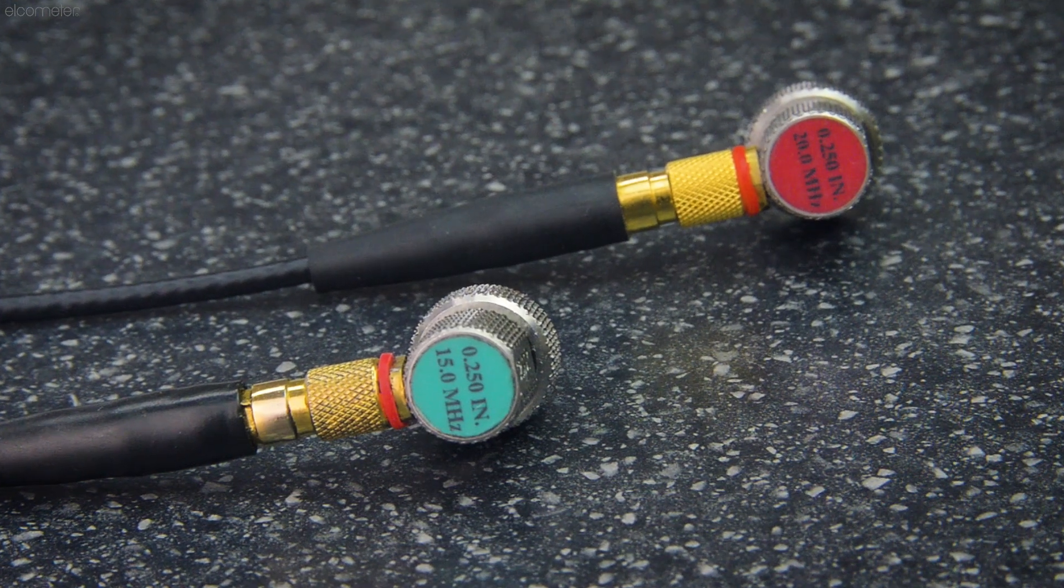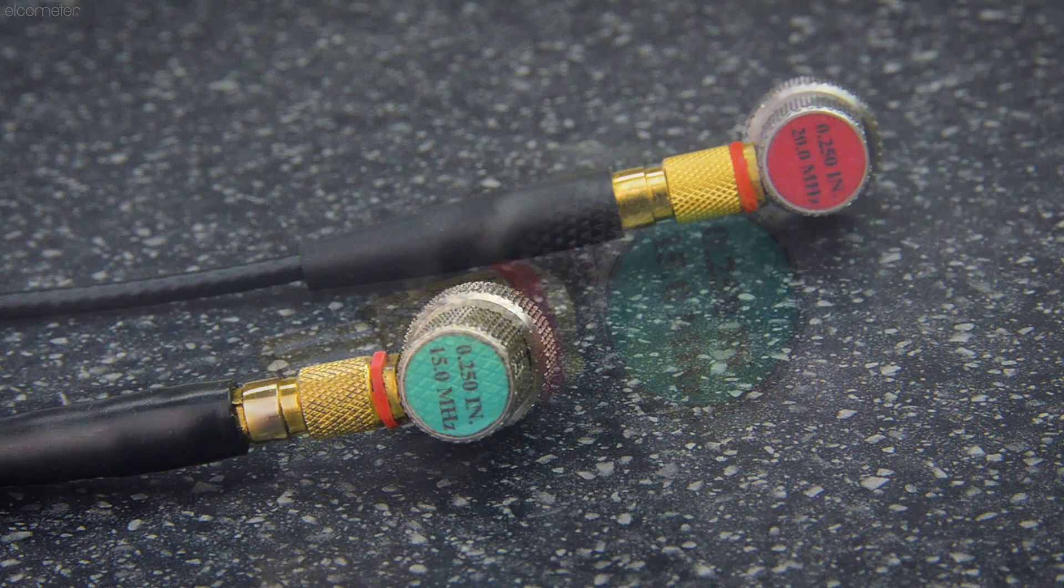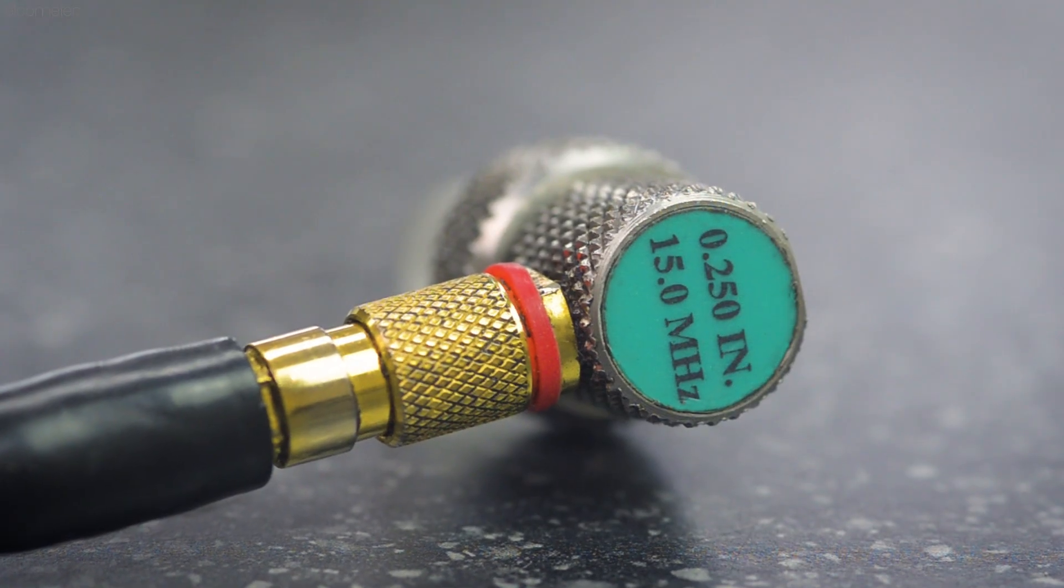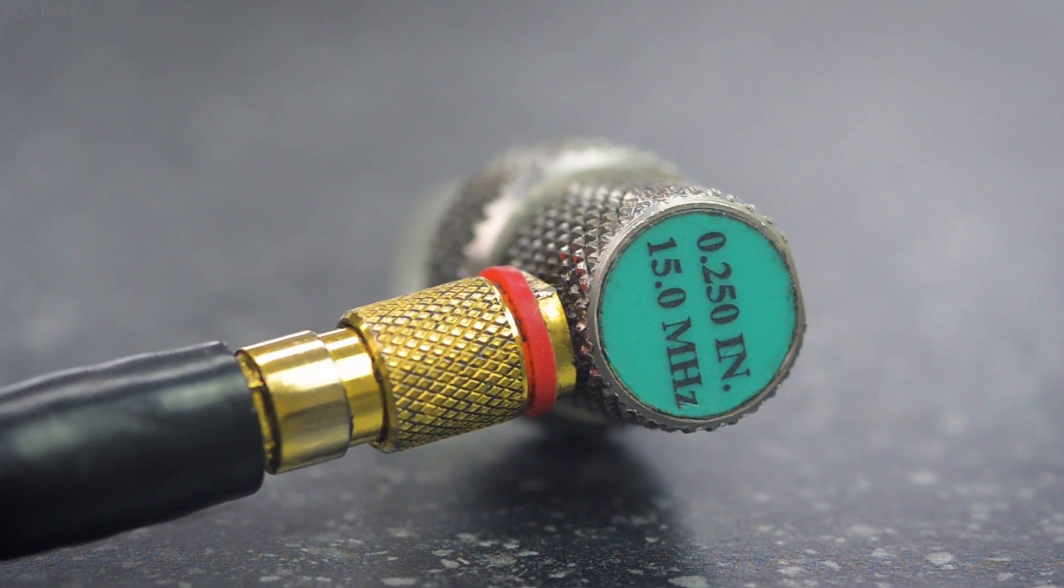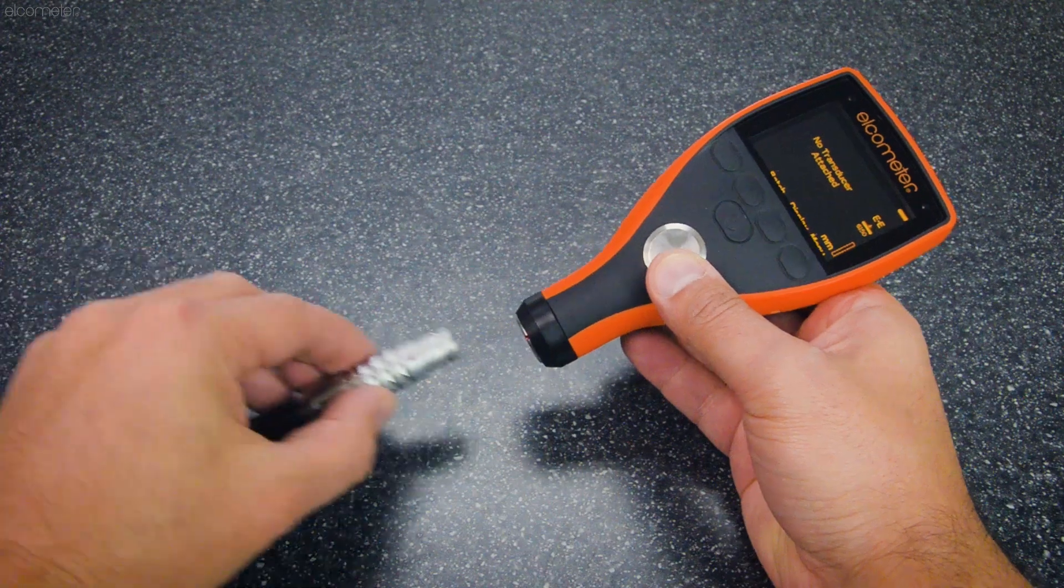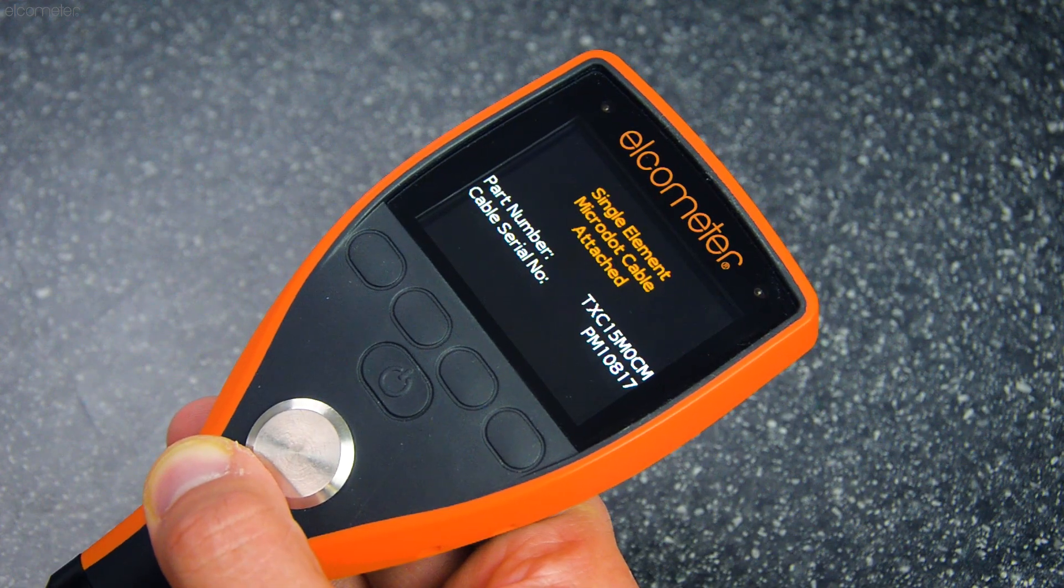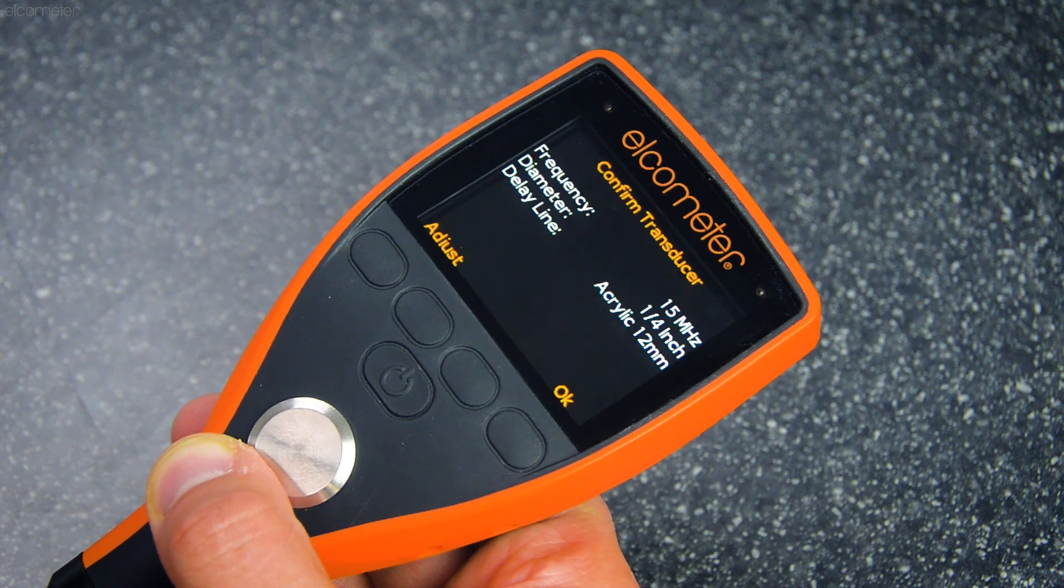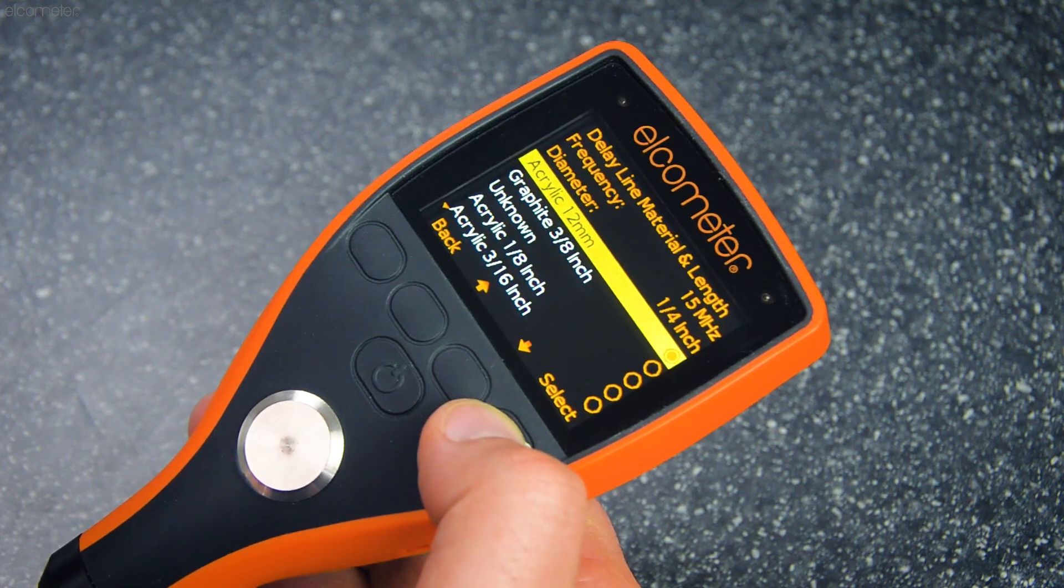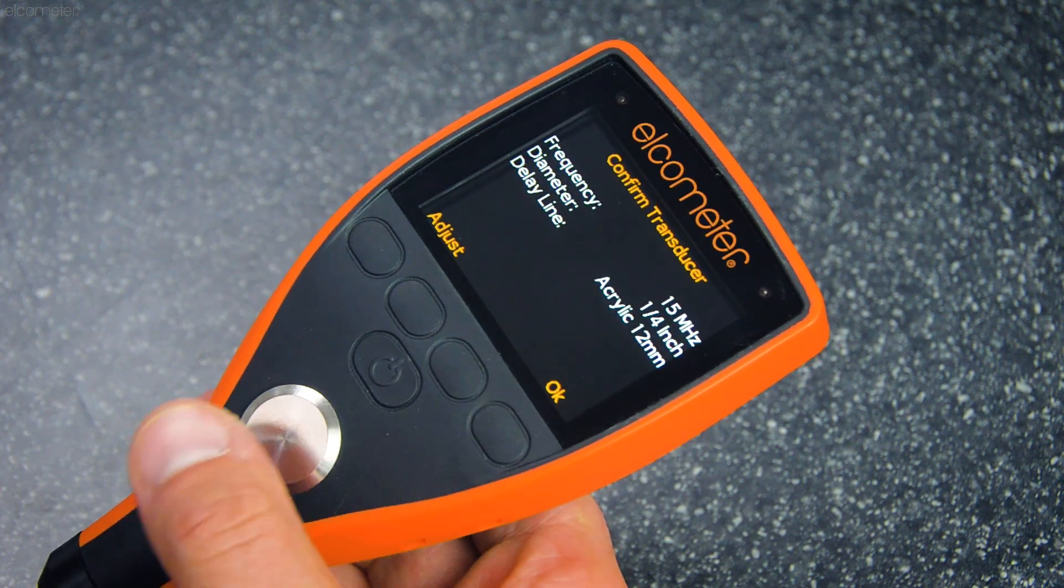The Elcometer PTG thickness gauges are designed to work with Elcometer's range of intelligent transducers, which all have automatic probe recognition. So as soon as the transducer is connected to a gauge, it immediately detects what type of transducer you're working with. All you need to do is set the appropriate length and material of delay line.